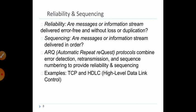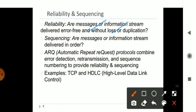Next is reliability. Reliability means your data transfer is dependent on the network, and that network should be error-free, without loss and without duplication. Information should reach the destination correctly. This includes sequencing — ensuring information is received in the same order it was sent, managed by the peer protocol. Automatic Repeat reQuest (ARQ) is a protocol that detects errors, handles retransmission, and provides sequence numbering. Examples of ARQ protocols include TCP (Transmission Control Protocol) and HDLC (High-Level Data Link Control).